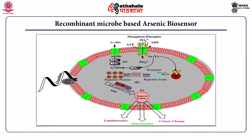This natural operon of the microbe has been modified genetically to produce a measurable response in the presence of arsenite. The structural genes of the microbe have been replaced with reporter genes such as green fluorescent protein (GFP) to produce fluorescence in response to arsenite. Alternatively, luciferase can be used to produce luminescence, or the LAGZ gene, which produces color in response to arsenite.